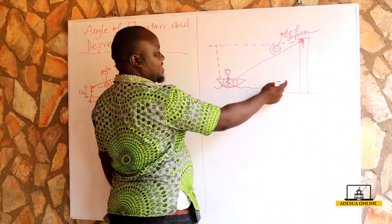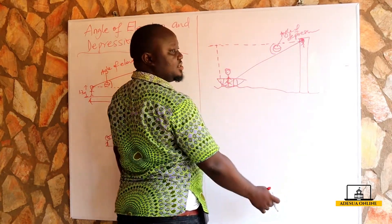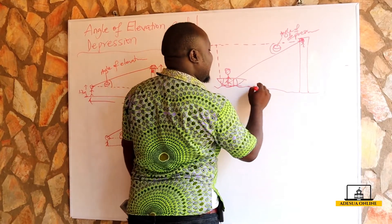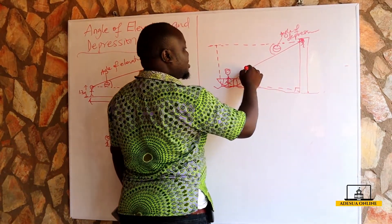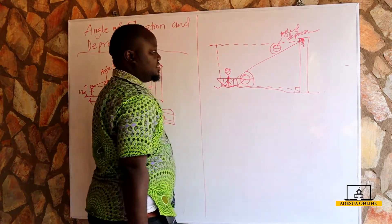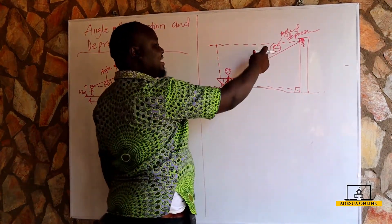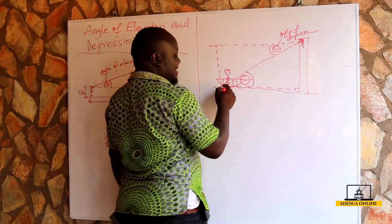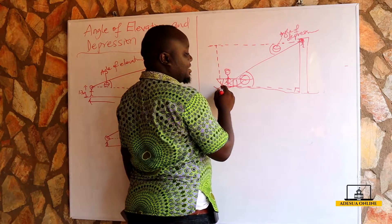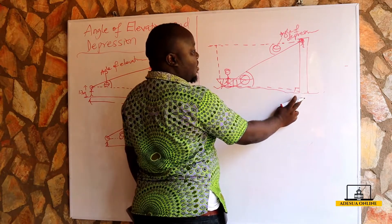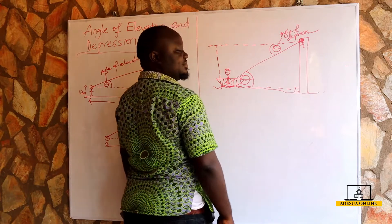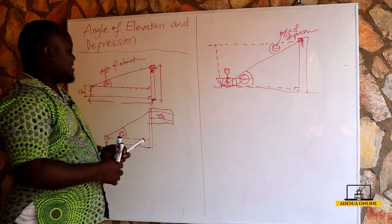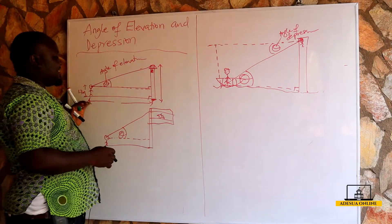This angle of depression will alternate with the angle at the base because the heights correspond. Since the ground angle is 90 degrees, the angle of depression alternates with the interior angle — so these two angles are equal. From this, we can find the distance between the canoe and the tower, or we can find the height of the tower.